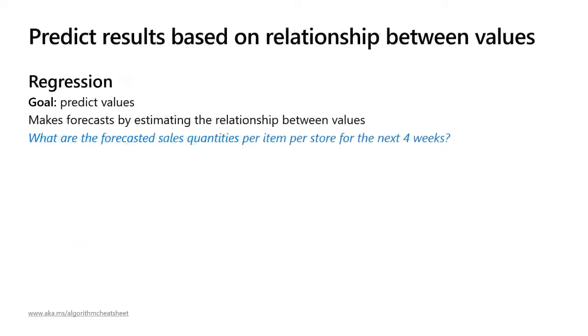Finally, the last category is regression — predicting results based on relationships between values. A real-world question here is: what are the forecasted sales quantities per item per store for the next four weeks? This would have come in handy when I was an undergrad working at the San Diego Zoo in food service, managing how much Diet Coke to order. We had to use human forecasting — for example, on Christmas we'd purchase more chicken because we found that people who didn't eat beef came to the zoo more often. But if we had all this data in a machine learning algorithm, we could have done that with just a click of a button.